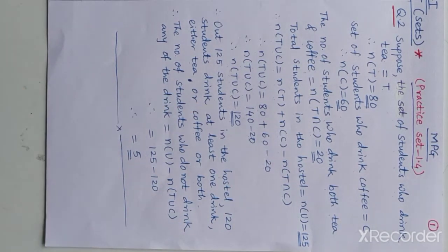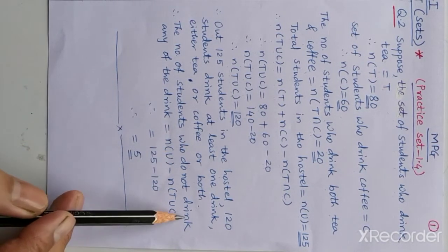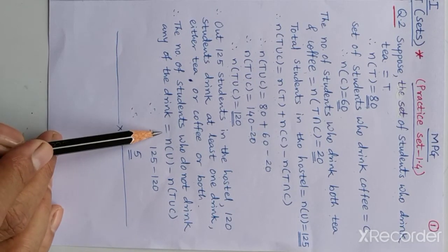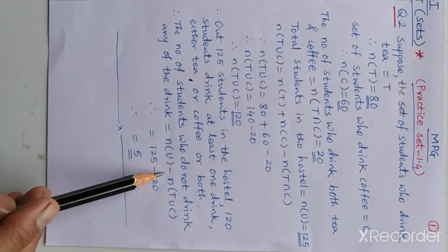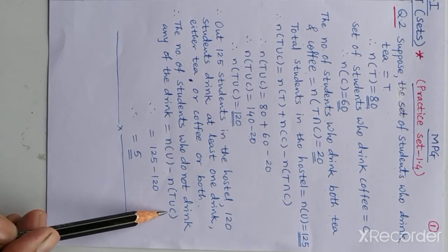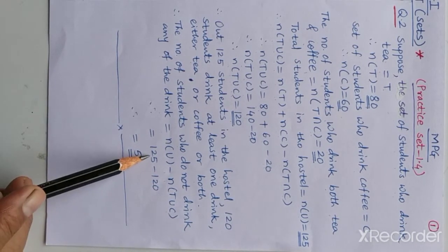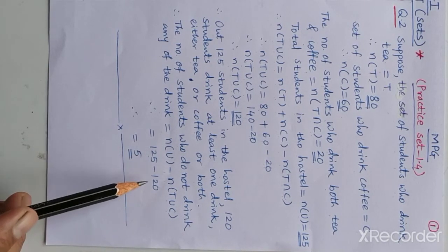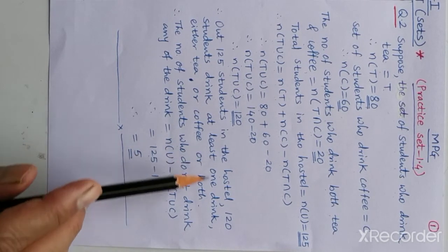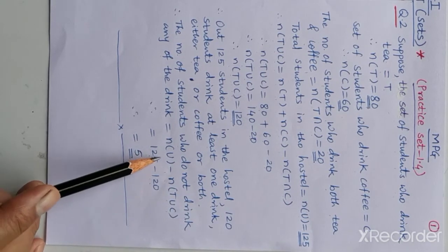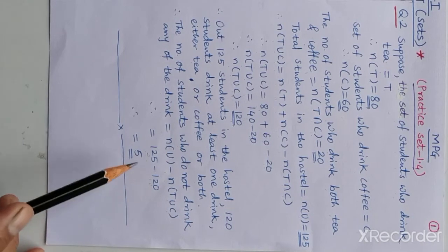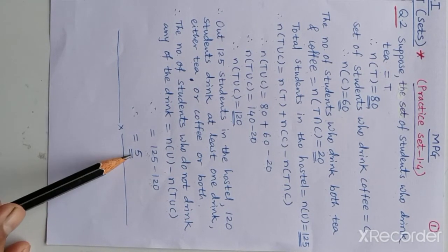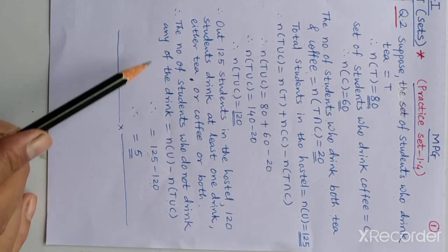We have to find the number of students who do not drink any drink. That is n(U) − n(T∪C) = 125 − 120 = 5. So there are 5 students who do not drink any of the drinks.